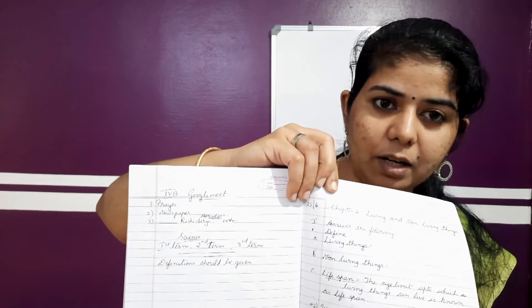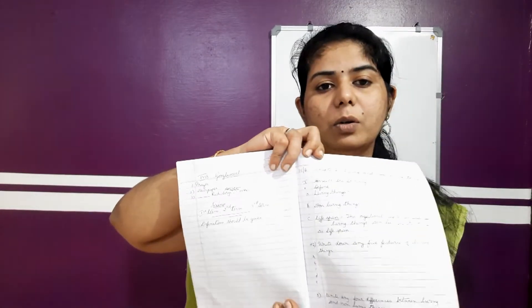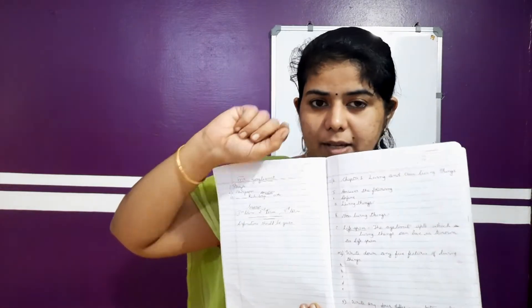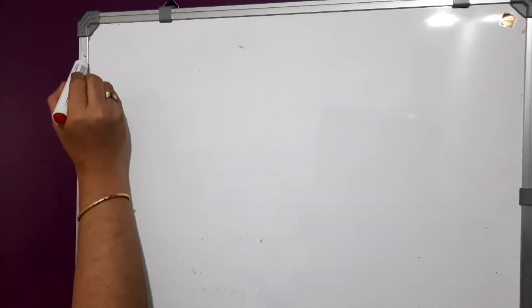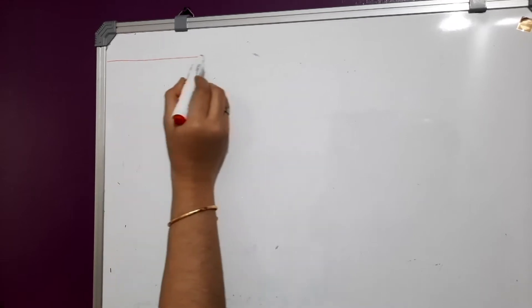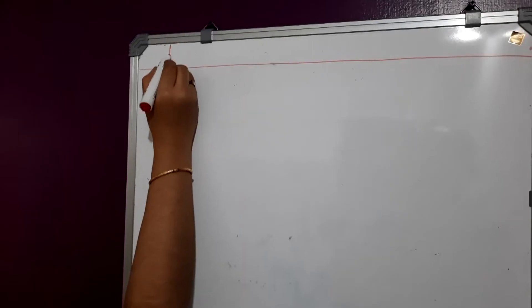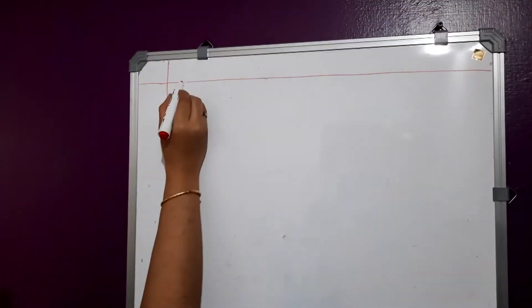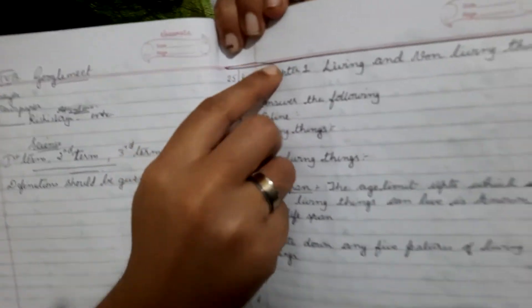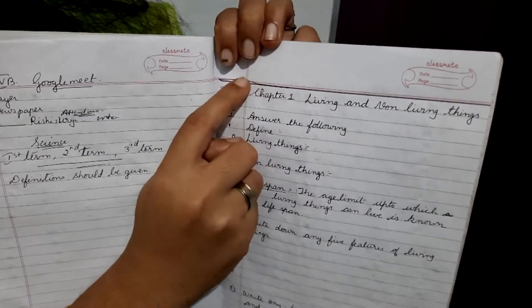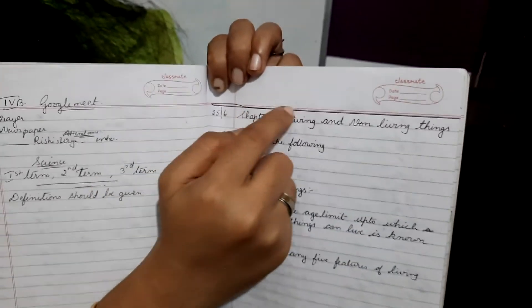Use your scale and pencil. You can see a pink line — the margin line — on the left side of the notebook. Using your scale and pencil, draw a line over that pink line. I'm using the red pen here to demonstrate. The margin will be here like this. So on that pink line, draw a line with your pencil.